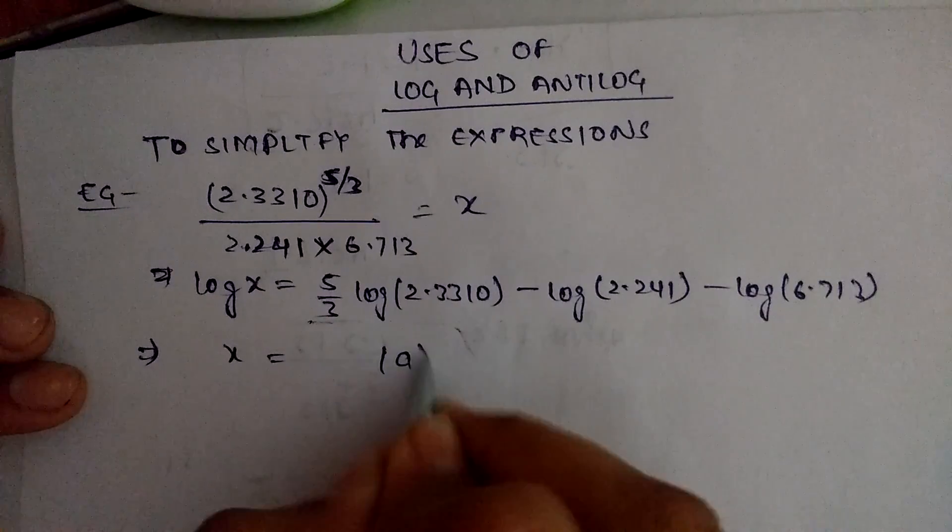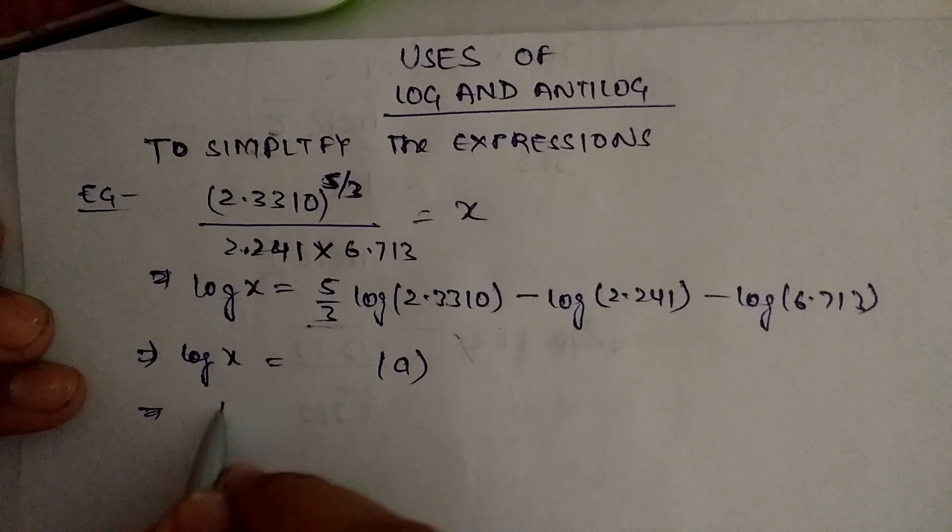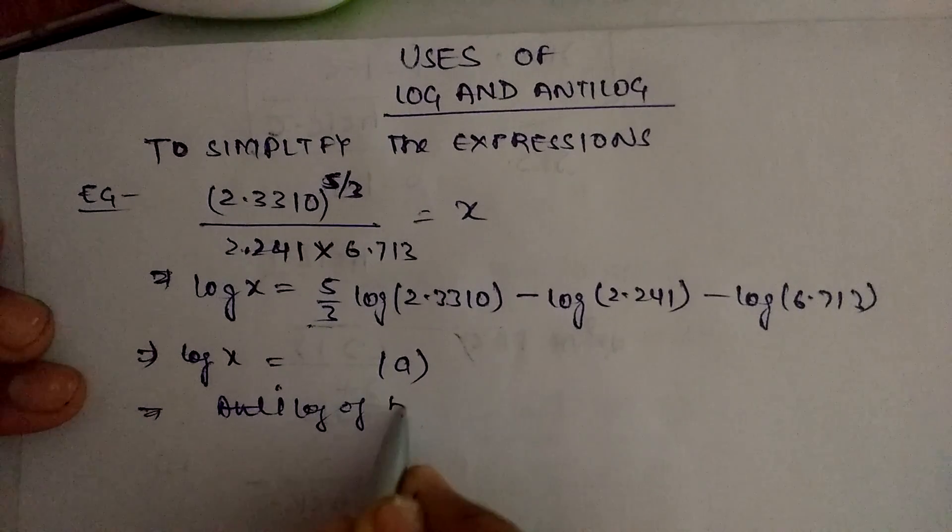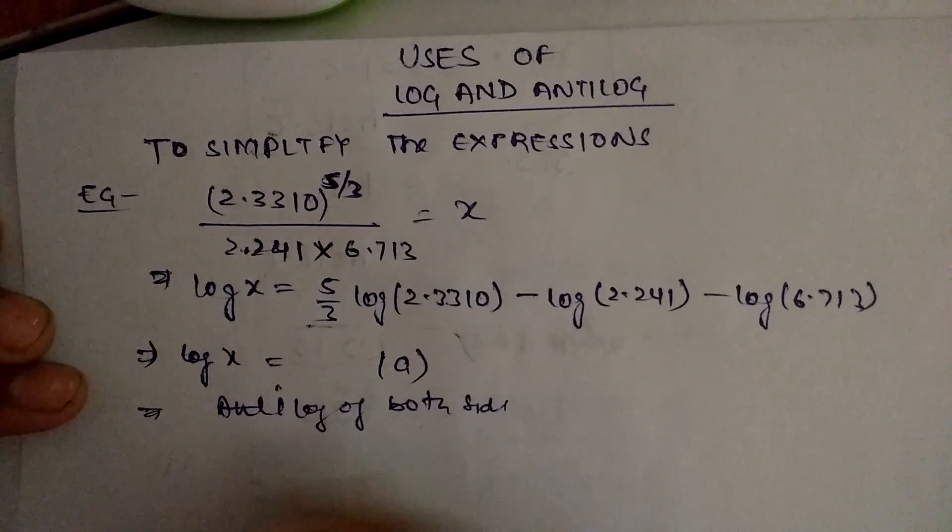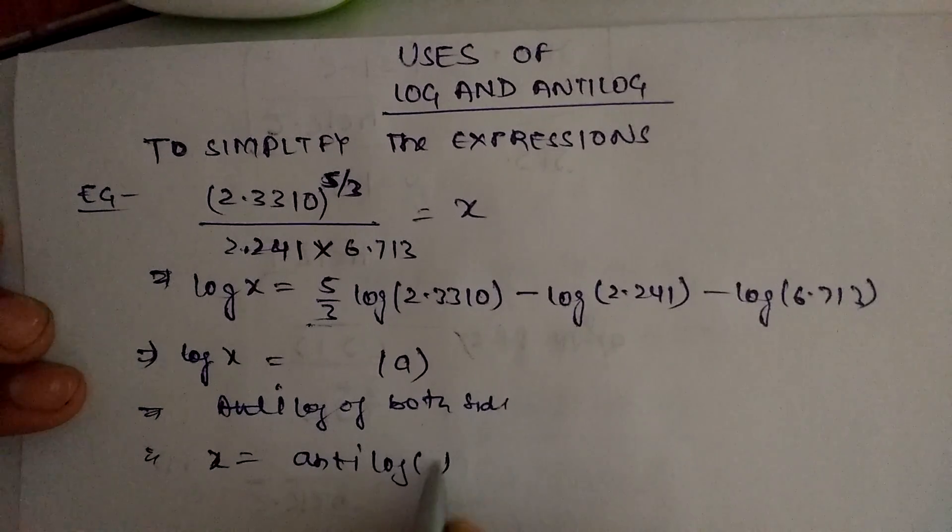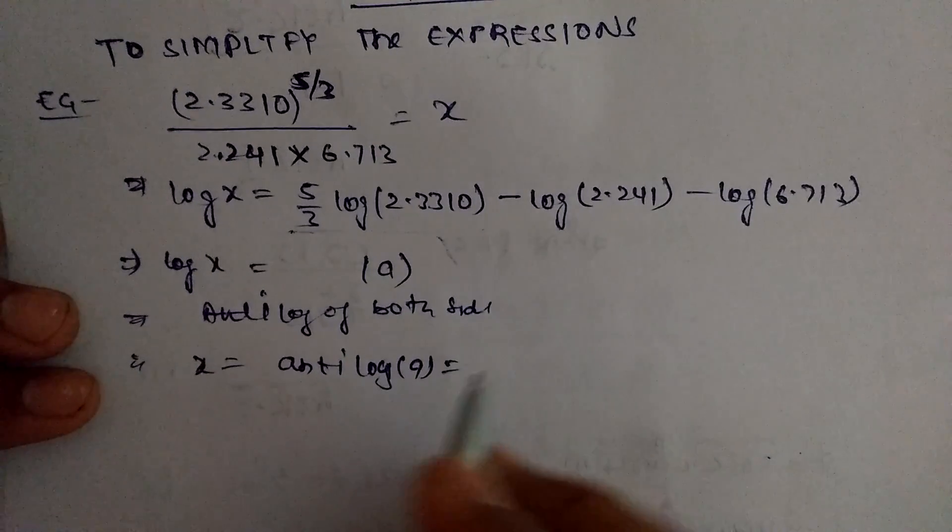Then it is log x. We will take antilog of both sides. Then it will be x equals antilog a, which on taking the antilog of this number a we will get some number b.